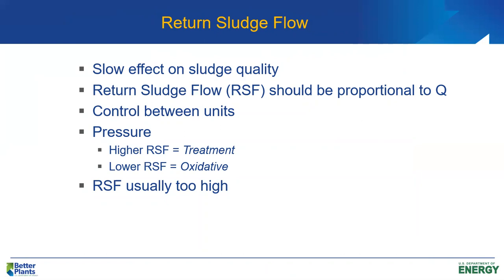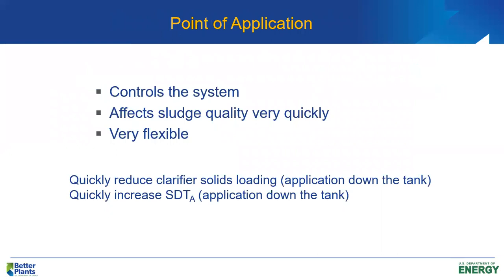If we have four biological reactors, ideally each reactor should get one-fourth of the influent flow rate and one-fourth of the return sludge flow rate — a fairly uniform distribution of flow and return sludge flow to each reactor. If we want to apply treatment pressure using return sludge flow, we increase the return rate; if we want to apply oxidative pressure, we lower the return sludge flow rate. In most of my dealings with activated sludge processes — having visited hundreds of treatment plants in the United States — most often the return sludge flow rate is too high and needs to be lowered.